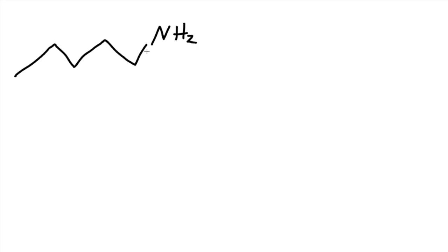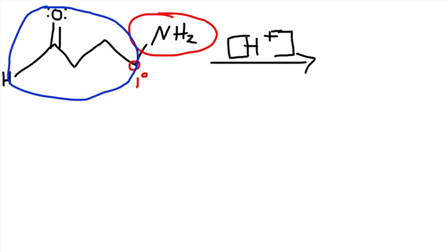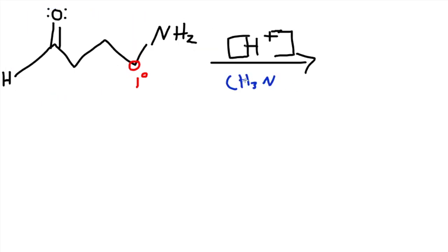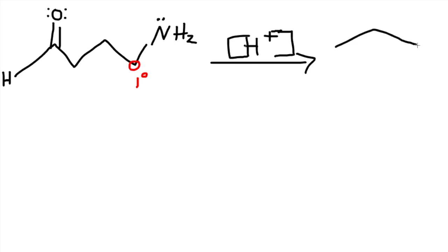Let's do another example. This structure is a little different from last time — it's still a primary amine, but the amine is on the structure itself. We'll still have acidic conditions. Because the amine is on the structure, it has lone pairs and it's going to form a ring — a cyclopentane ring, because we have a five-membered ring. I'll show you why when we do the mechanism.